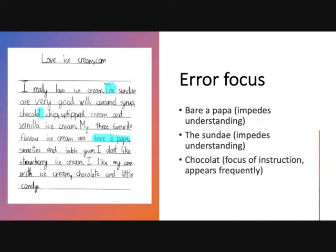Chocolate is misspelled, and this was a focus of instruction — we were talking about ice cream and different flavors, so they should know how to spell this. Also, it appears frequently because they spelled chocolate correctly at the bottom. The last one is 'flavors of ice cream' — it's something we're going to see a lot: flavors of ice cream, flavors of gum, flavors of candy. So if we teach them the collocation 'flavors of,' they'll be able to use that again and again.